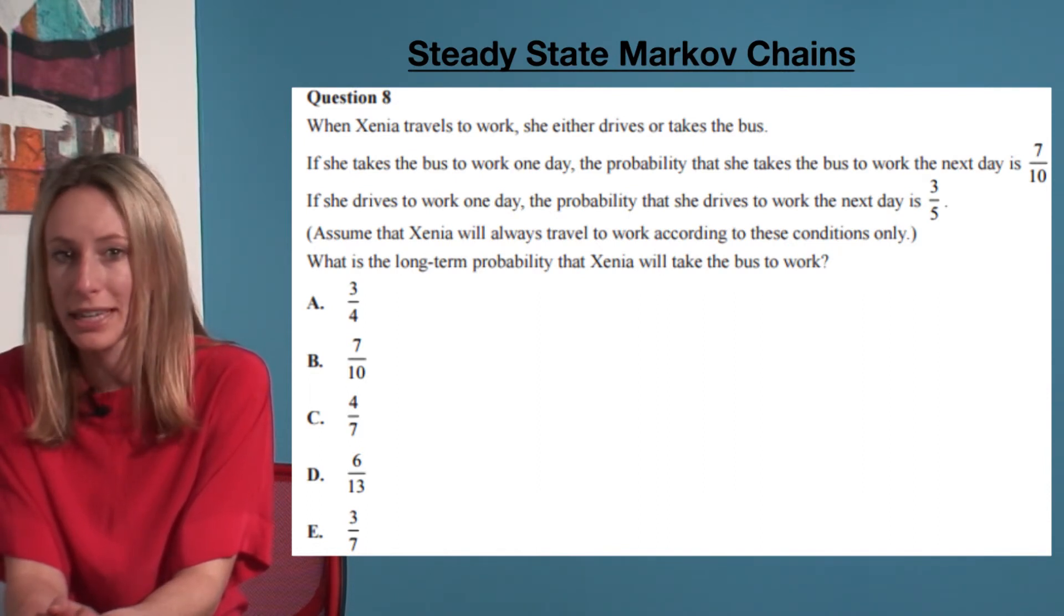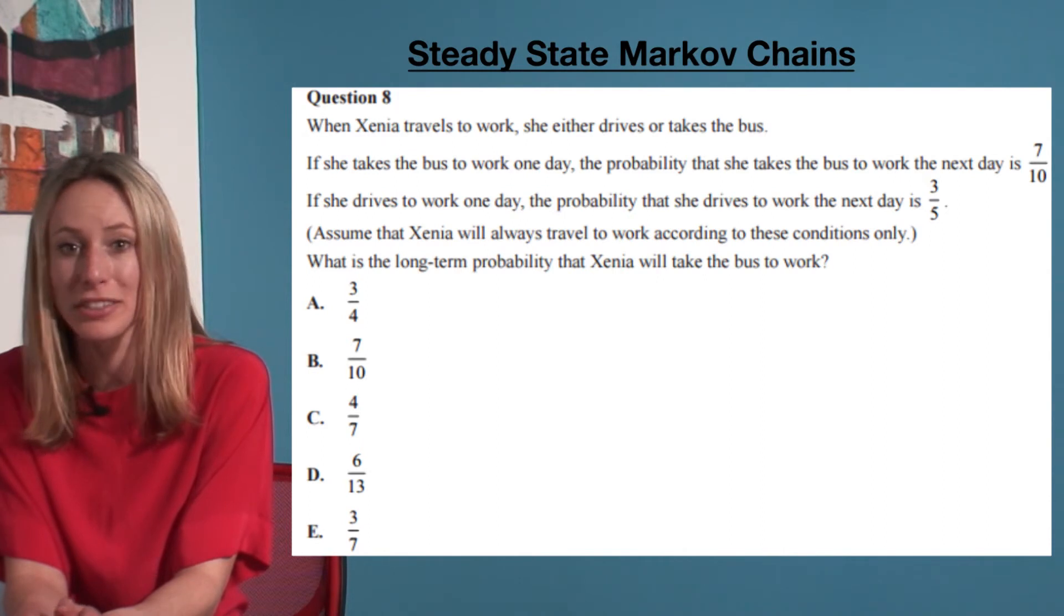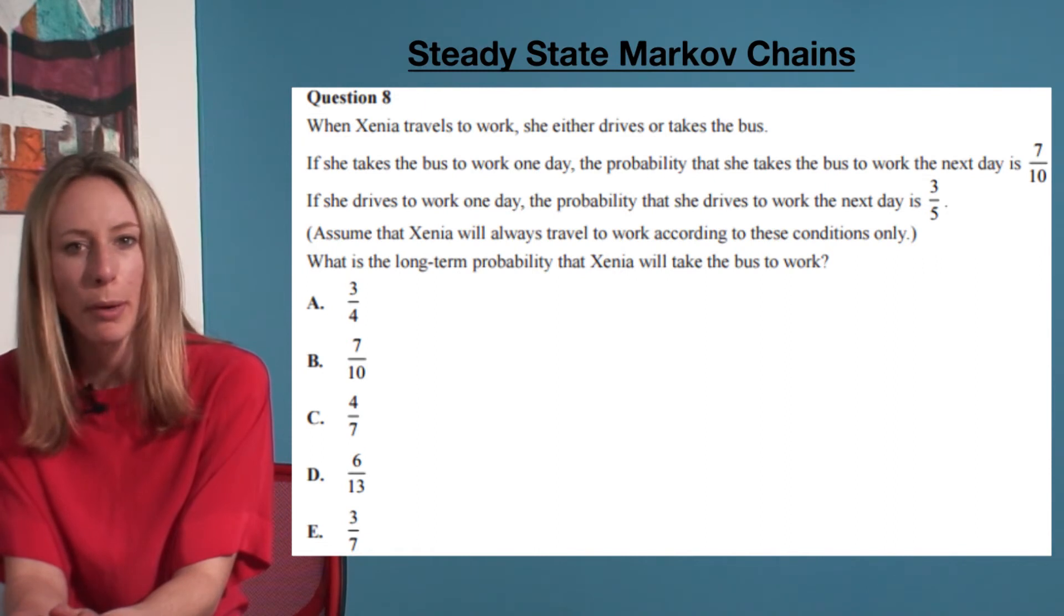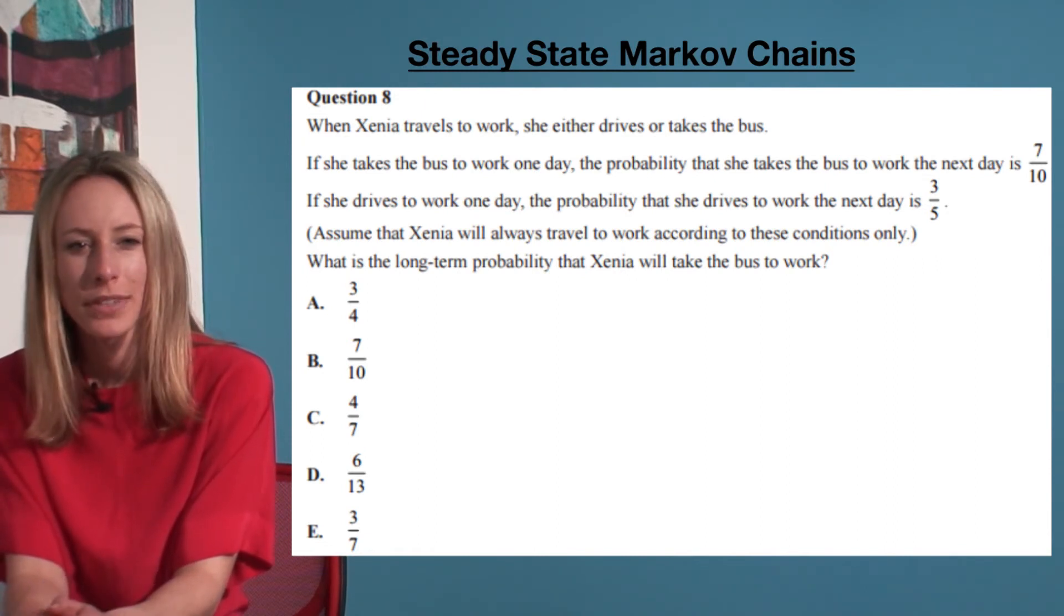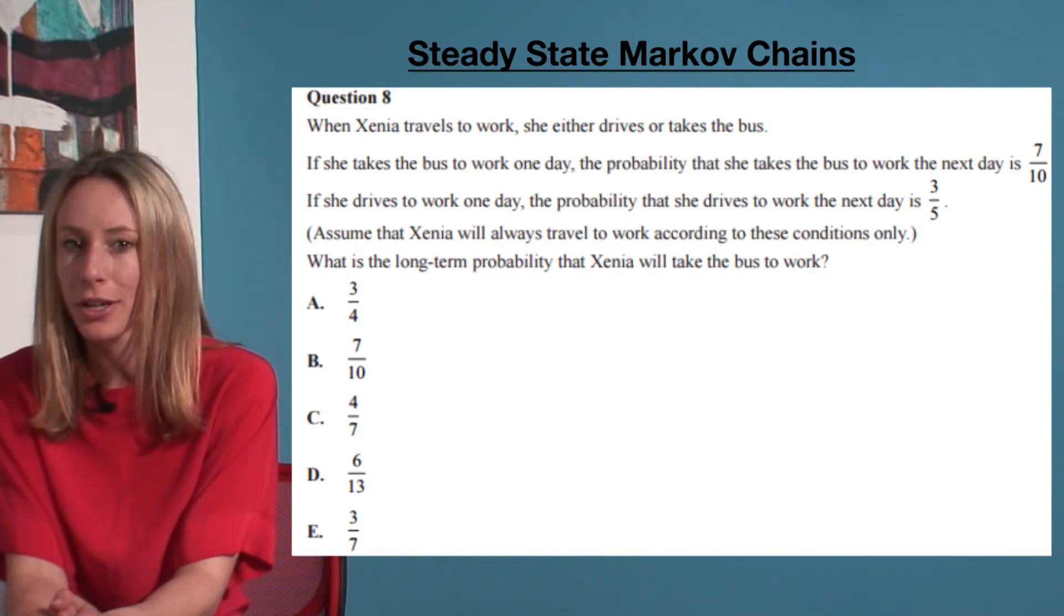If she takes the bus to work one day, the probability that she takes the bus the next day is 7/10. If she drives to work one day, the probability that she drives the next day is 3/5. What is the long-term probability that Xenia will take the bus to work?